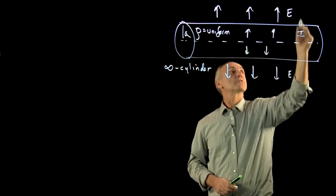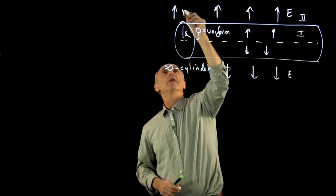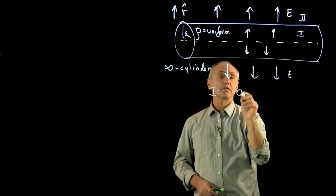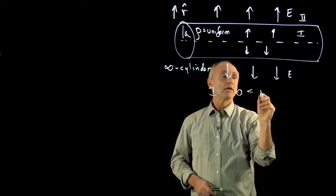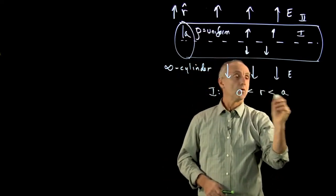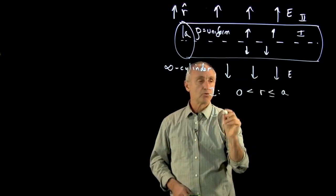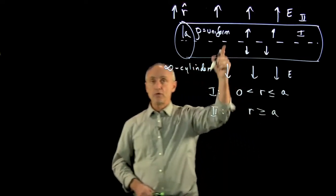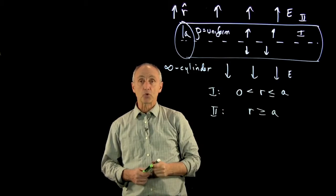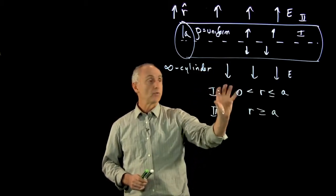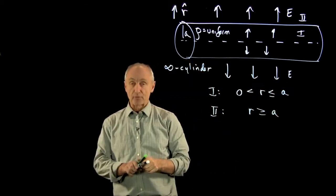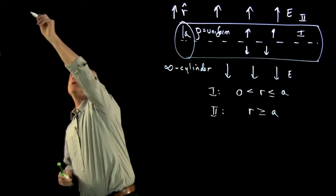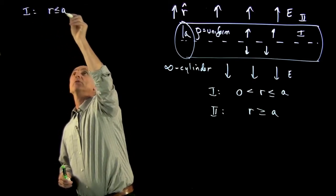So we have two regions of space — region one and region two. Using a cylindrical coordinate system, region one is where r is less than or equal to the radius a, and region two is where r is greater than or equal to a. Because there are two regions of space, I'll need to apply Gauss's law separately for each region.